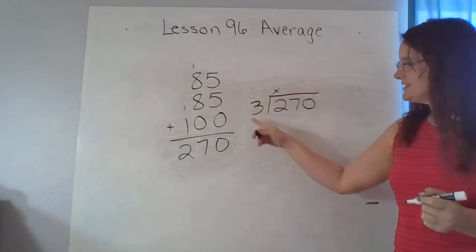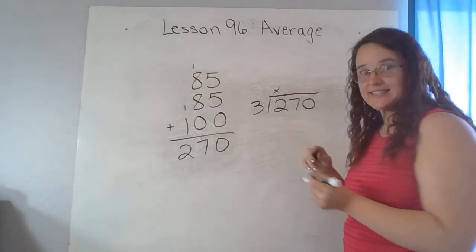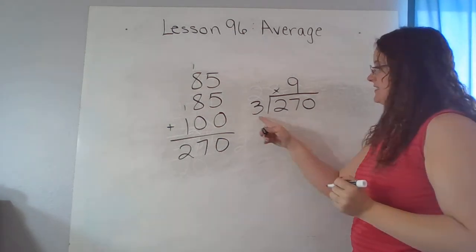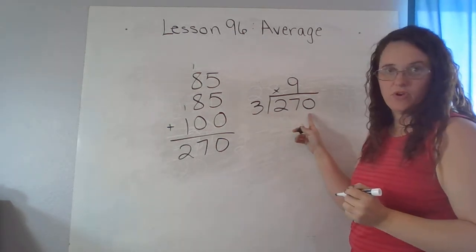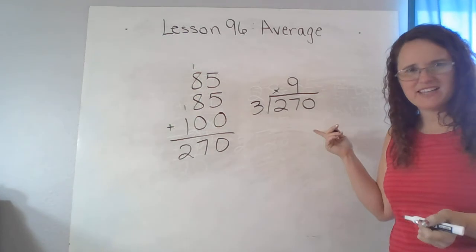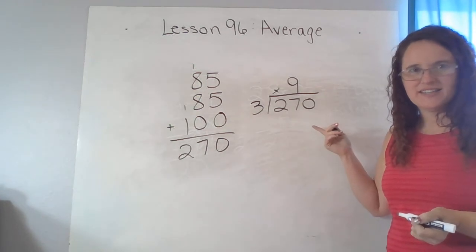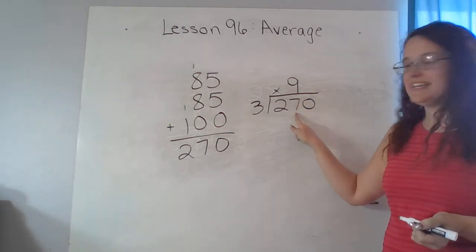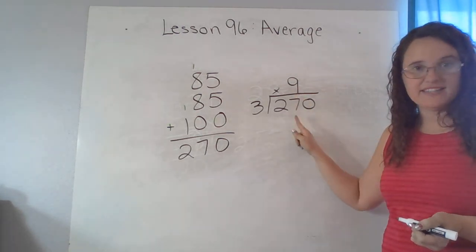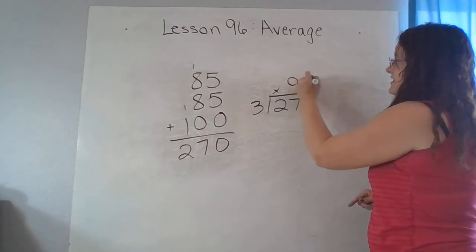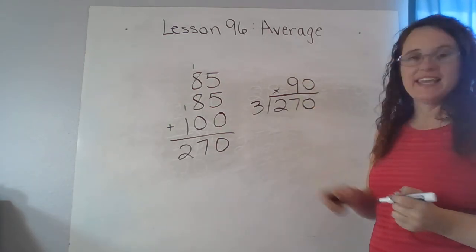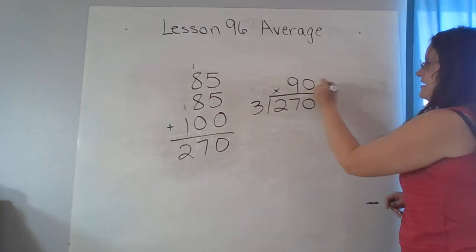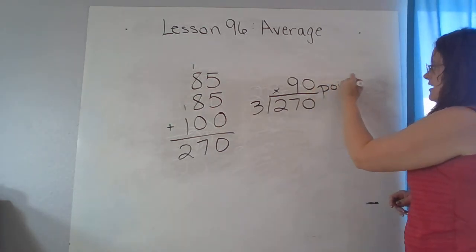Does three go into two? No. Does three go into 27? Yes, evenly. Nine times. Does three go into zero? No. Can I just say nine? Can I leave my answer like this? No. Because look at the place value here. This nine is in the tens place. So I have to fill in the ones with a zero. So his average score was 90 points.